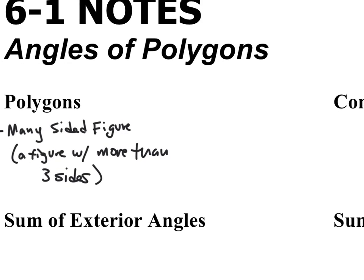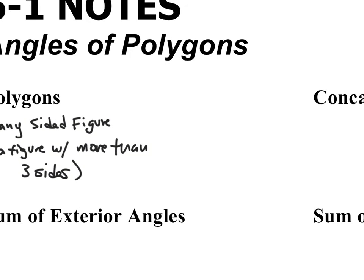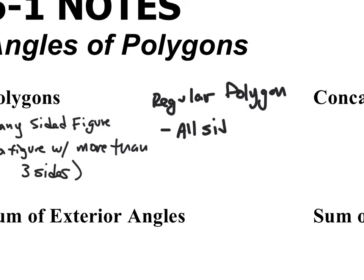There's a special type of polygon called a regular polygon. A regular polygon is a polygon where all sides and all angles are congruent.